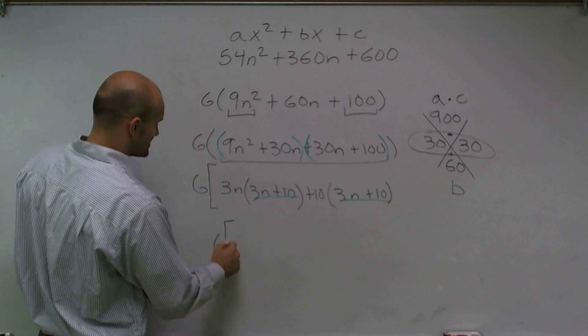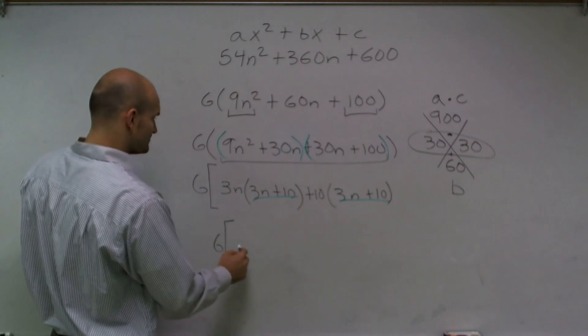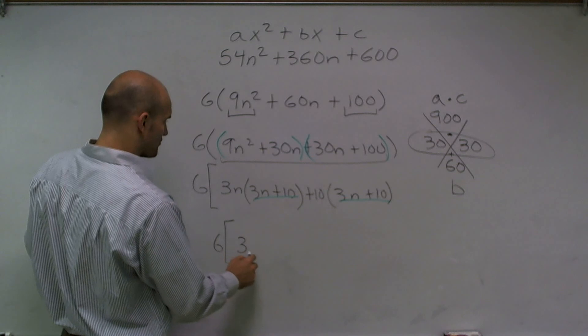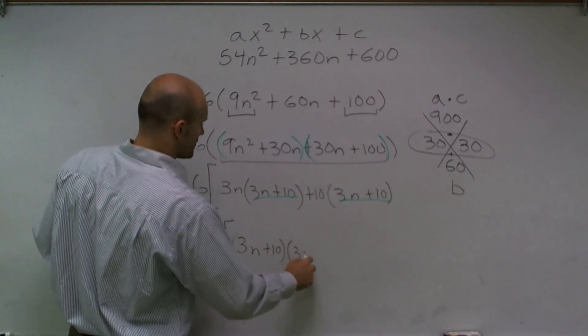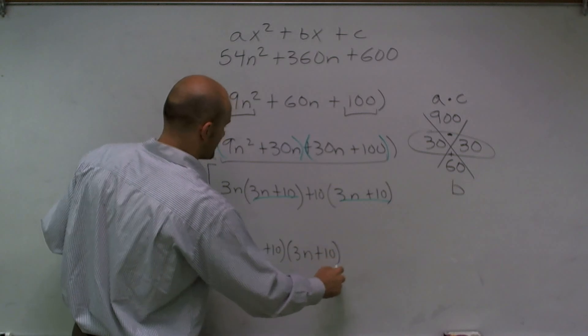So my final answer is going to be 6 times 3n plus 10, factored out, times 3n plus 10.